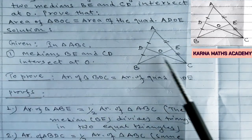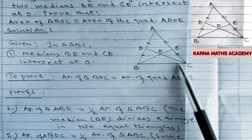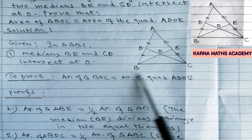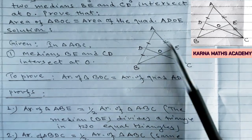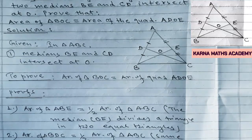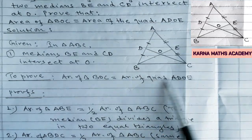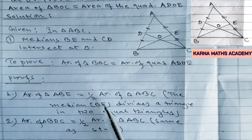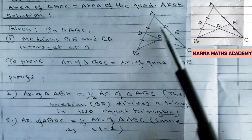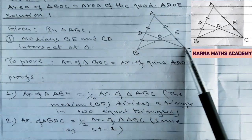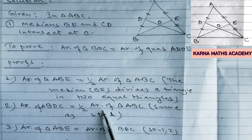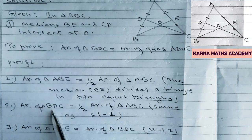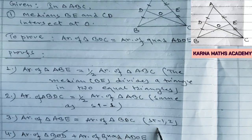Similarly, we are given the next median CD. CD divides triangle ABC into two equal triangles. So in statement number 2, area of triangle BCD equals one-half of area of triangle ABC. Combining statement number 1 and 2, we get area of triangle ABE is equal to area of triangle BDC. In statement number 3, by combining 1 and 2: area of triangle ABE equals area of triangle BDC.